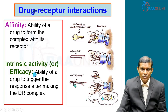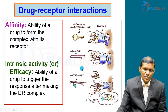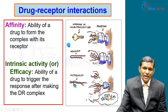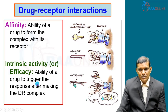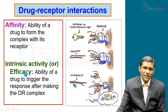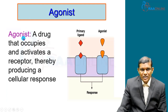The second concept is intrinsic activity or efficacy, which is the most important part for a drug molecule. Once you insert the key and try to open the lock — if it opens, then the efficacy is good, and we call that an agonist. The ability of the drug, after binding to the receptor, to produce a response is called efficacy or intrinsic activity.